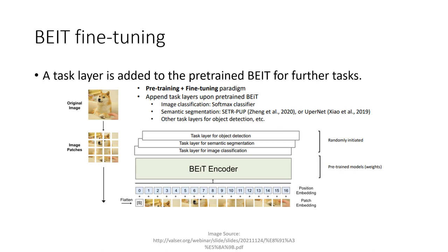We perform fine-tuning by appending our task layer to our pre-trained weights. The examples are outlined in the picture below: image classification using a softmax classifier, or semantic segmentation using UperNet, or other task layers such as object detection. One important thing to note is that our BEIT encoder has pre-trained weights, whereas the task layer is randomly initialized.